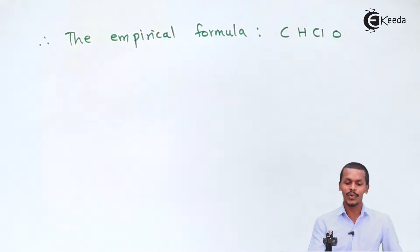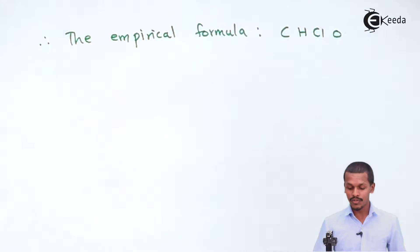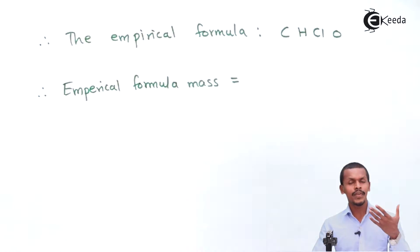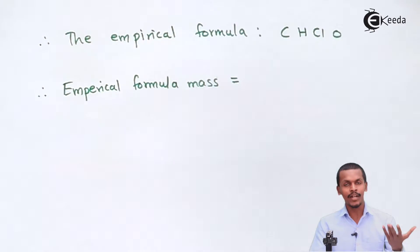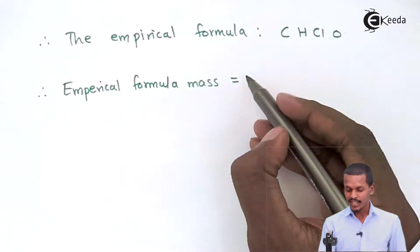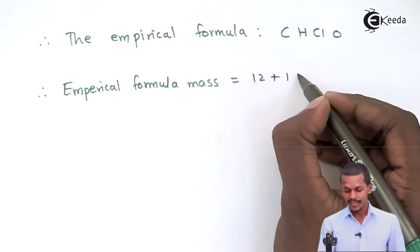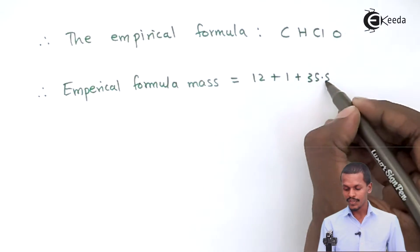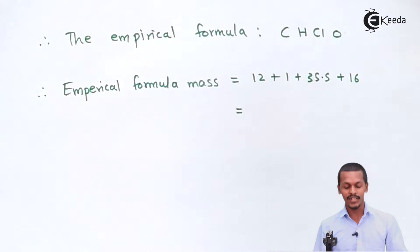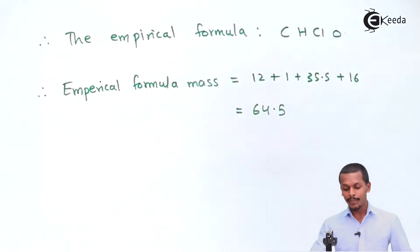Once we have the empirical formula, we calculate the empirical formula mass by summing the atomic masses of all elements. Carbon = 12, hydrogen = 1, chlorine = 35.5, oxygen = 16. Adding these: 12 + 1 + 35.5 + 16 = 64.5. So the empirical formula mass is 64.5.